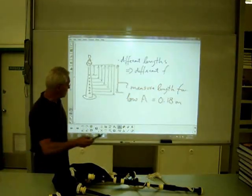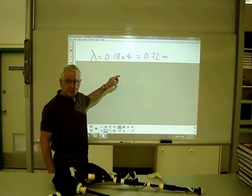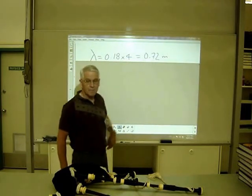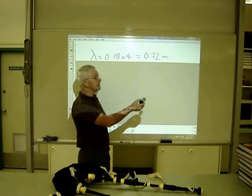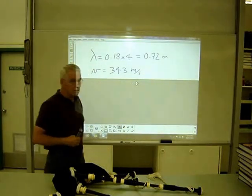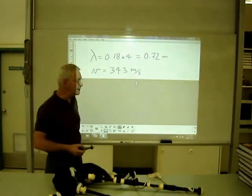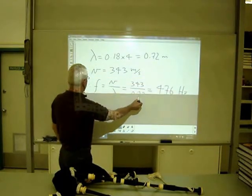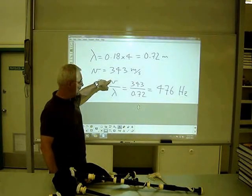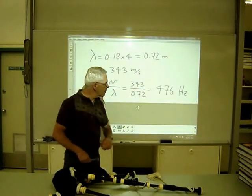Let's see what that corresponds to. If 0.18 meters is a quarter wavelength, then multiplying 0.18 times 4 gives us a wavelength of 0.72 meters. For the wave equation, we also need the velocity of sound in air, which can vary a little bit with temperature, but for normal room temperature it's going to be about 343 meters per second. So using the wave equation, frequency equals the velocity of sound in air divided by the wavelength: 343 divided by 0.72, which gives us 476 hertz.